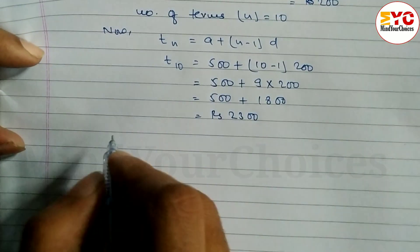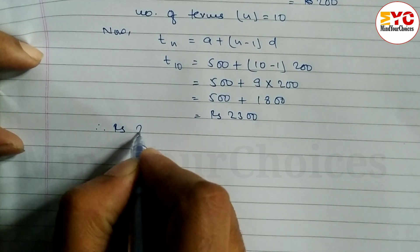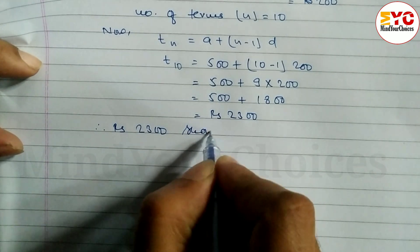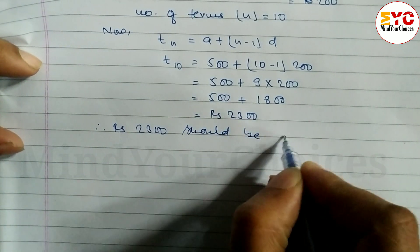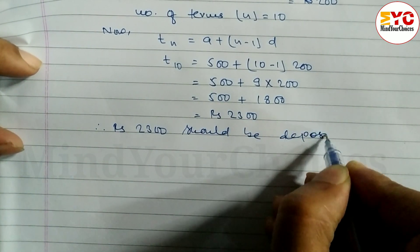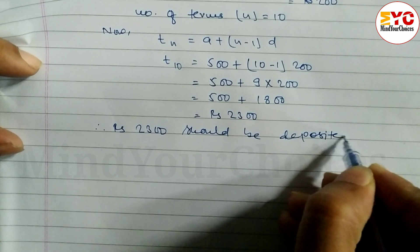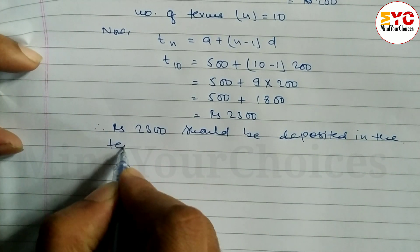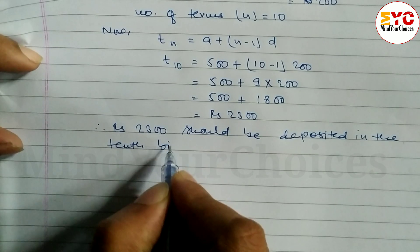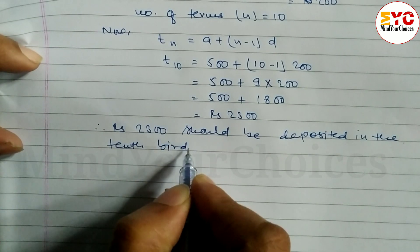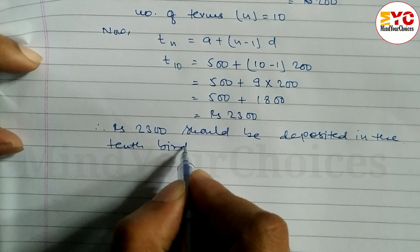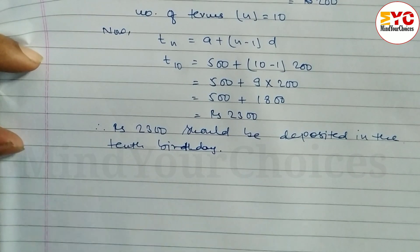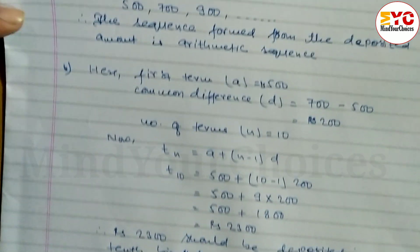Therefore, rupees 2300 should be deposited on the 10th birthday. Hope you understand this part B.